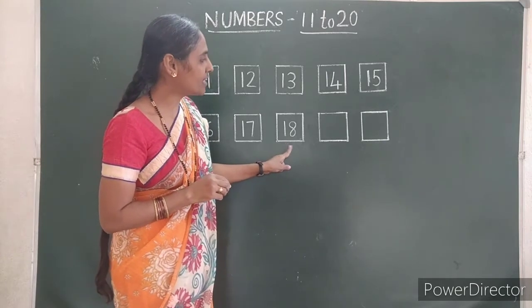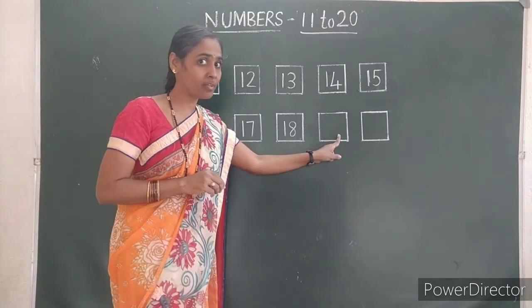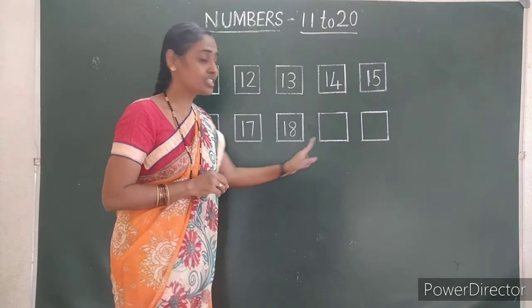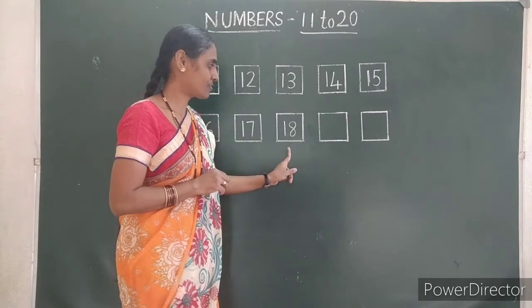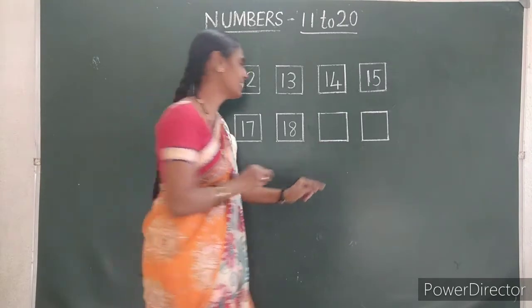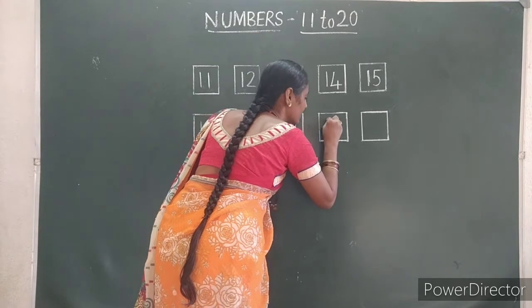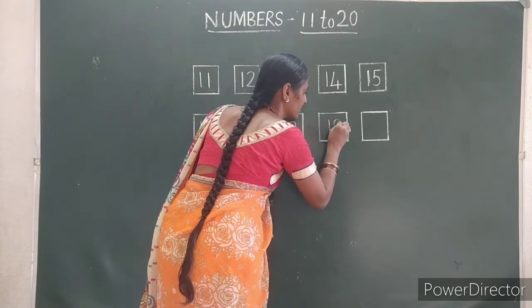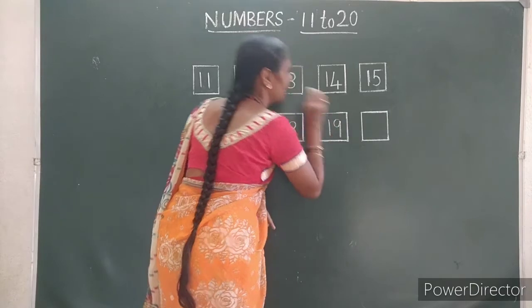After eighteen, which number will be there in the box? Which number will come? After eighteen, nineteen. One. Nine. Nineteen.